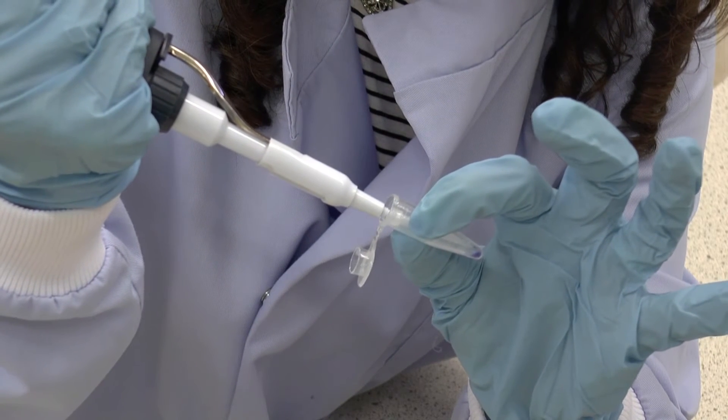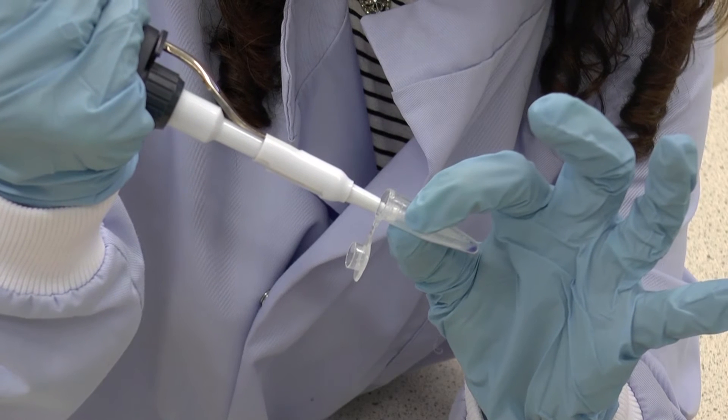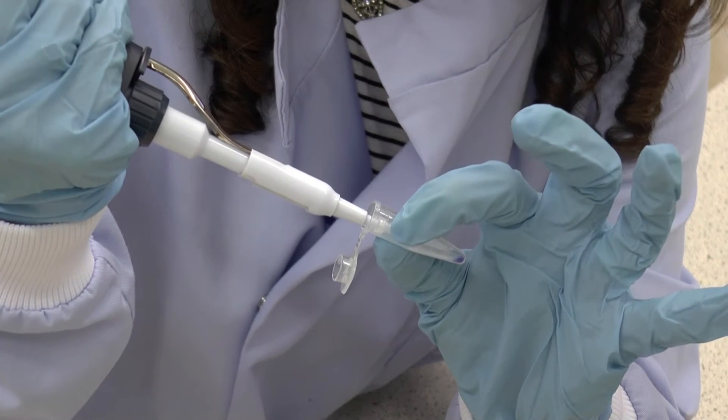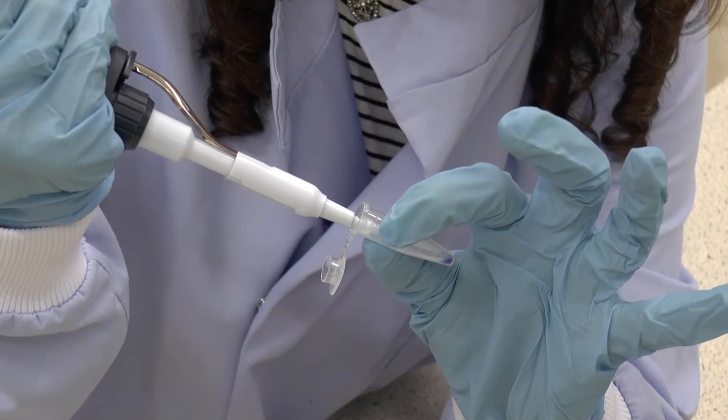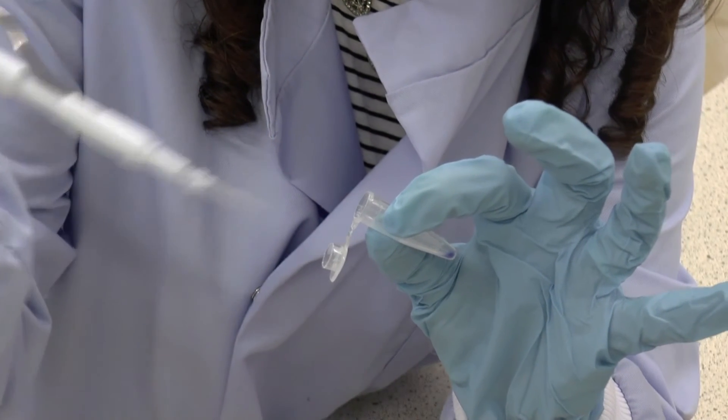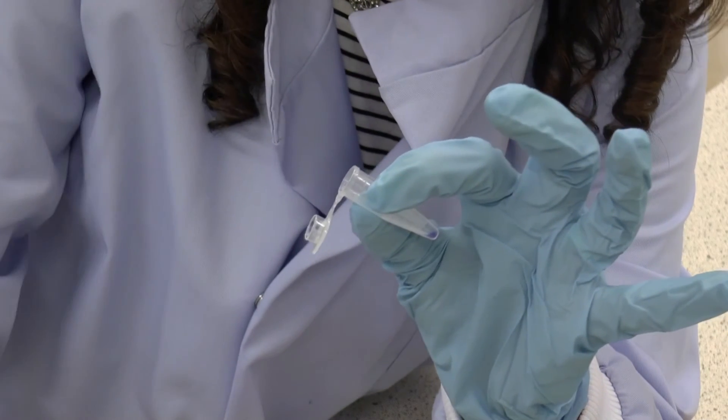Now what you can see is that there's still some of the enzyme left in the tip of my pipette. So I want to pipette up and down a couple of times very carefully and then eject so that all of my enzyme has gone into the solution.